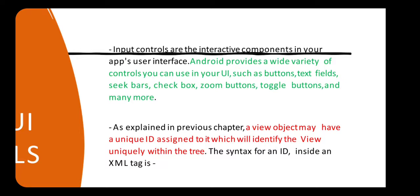Android provides a variety of controls you can use in your user interface such as buttons, text, checkbox, zoom button, seek bars, toggle buttons and many more. As explained in the previous chapter — chapter number two — the view object may have a unique ID assigned to it which will identify the view uniquely within the tree.